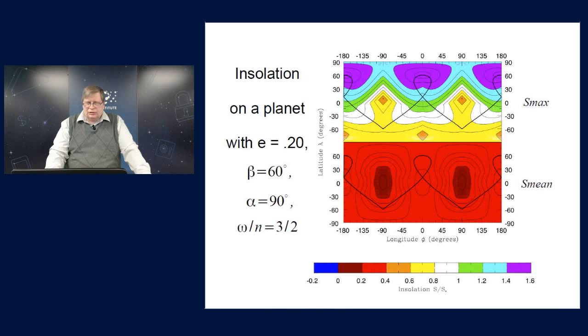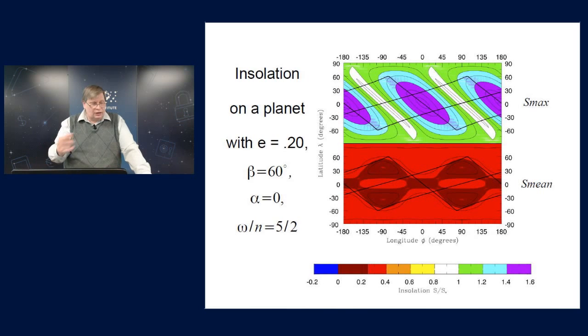If we go up to a higher resonance still, this is the five-halves resonance, now the sub-solar track is going around, it's still east to west, but now it goes around three times wrapping around the planet. And again, the peak insolation is repeating twice around, so is the mean insolation, and you can see how that evolves with alpha as I step through this.